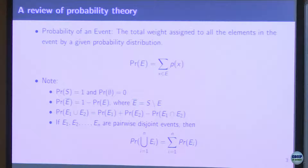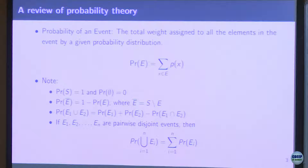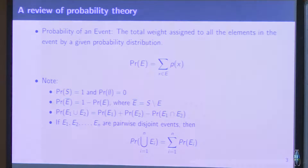The probability of an event would be the sum total of probabilities of its elements in the set. The probability of the whole sample space would be 1, and the probability of the empty set — like somehow you toss a coin and it goes up to space — its probability would be 0.